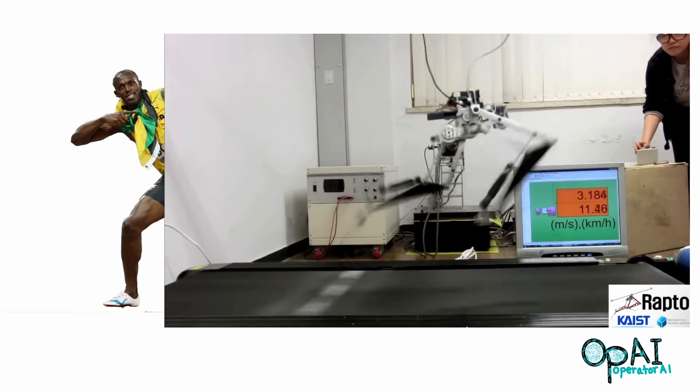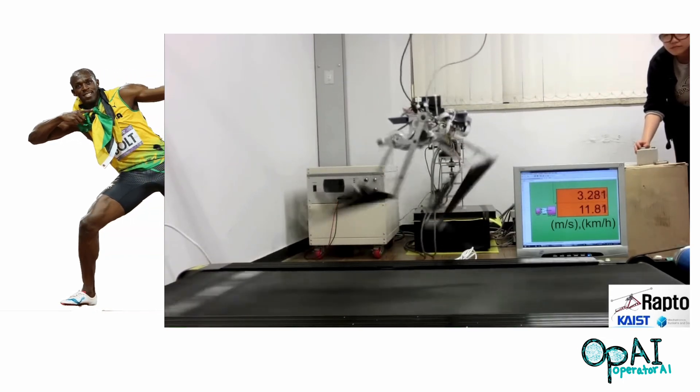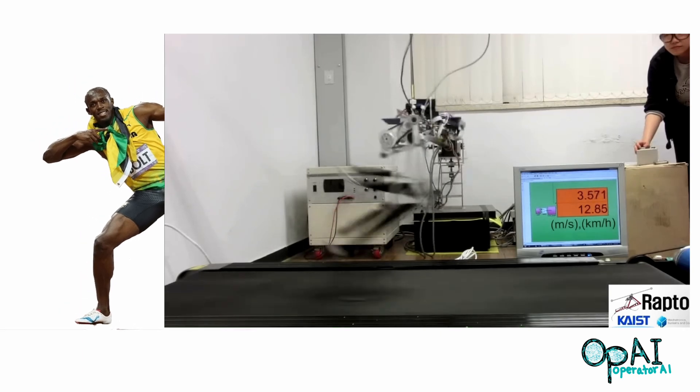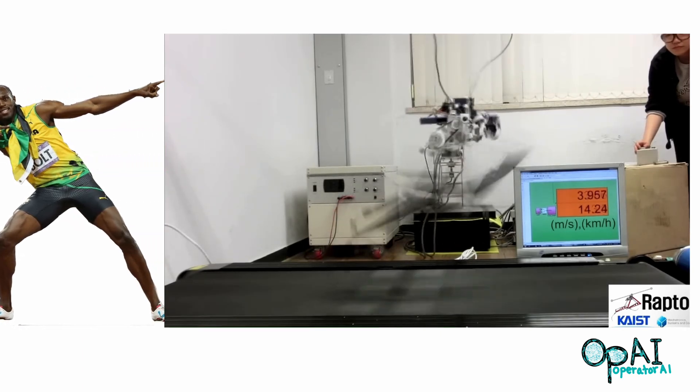Usain Bolt, the Olympic track star's top speed recorded, is 27 miles per hour. It reaches top speed when attaching to a rail and has a power source.